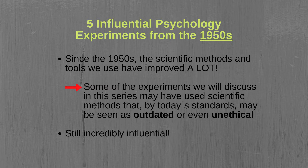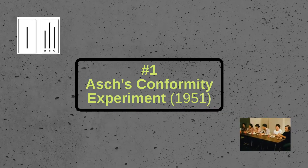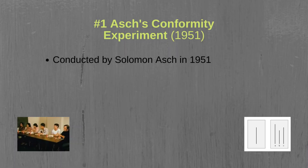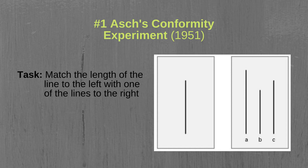With that being said, let's get started. The first experiment that we will discuss is the conformity study conducted by Solomon Asch in 1951. Asch was interested in studying people's tendency to conform when exposed to societal pressure. In his experiment, Asch invited his participants to his lab where they were shown pictures with lines of various lengths. Their task was to match the length of the line to the left with one of the three lines on the right.